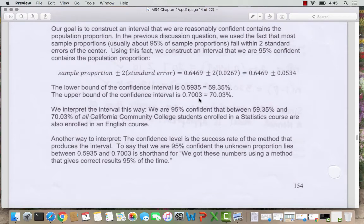So you can check in your calculator. 0.6469 minus 0.0534 gives us 0.5935. This is our lower bound, which is 59.35%. The upper bound comes from adding, so we take our 0.6469 plus 0.0534 and we get 0.7003 or 70.03%.